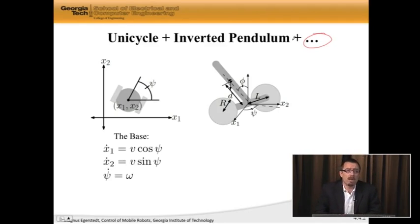Let's start with the base. The base is a unicycle, x1 and x2. That's the x and y position of the base. And it's v cosine psi, where psi is the heading. And psi dot is omega. We've seen this repeatedly. This is the dynamics of the base, almost. And then, on top of that, we have this inverted pendulum. We need phi, which is the angle by which the pendulum is deviating from upright position, and we also need the angular velocity.